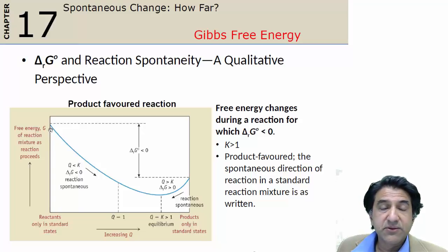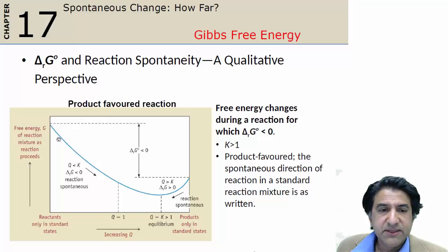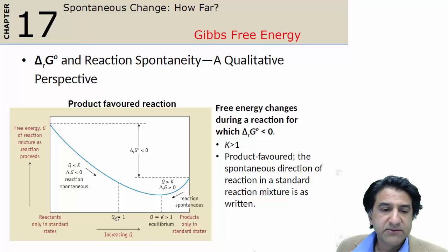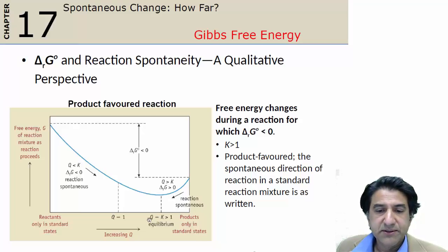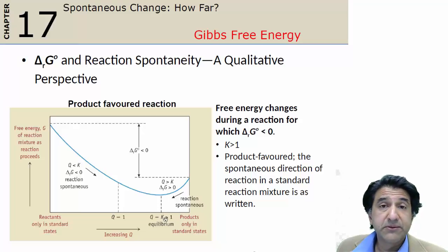Delta G equals delta G naught plus RT ln Q. We're trying to motivate that equation. So here, delta G is decreasing until perhaps at this midpoint we have roughly a reaction quotient of one — maybe more or less equal reactants and products. But the reaction keeps going. G keeps decreasing until no more reaction occurs. At this point, delta G can't decrease any more — this is the equilibrium point. We must have the reaction quotient Q equals K, because that's what happens at equilibrium.